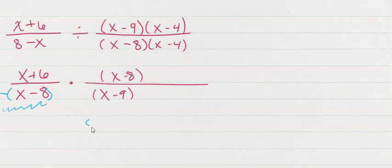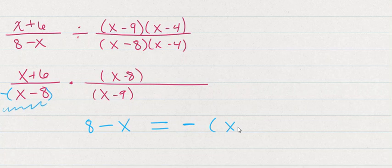You see, 8 minus x is the opposite of x minus 8. It's easier to see with something like this. If I did 7 minus 3, you can see that if I flipped them to 3 minus 7, I'd get the opposite.